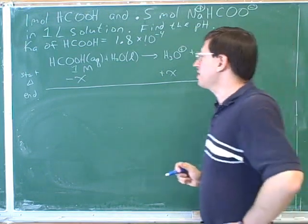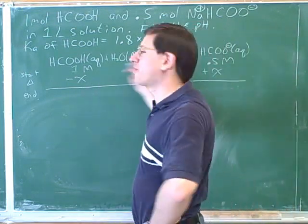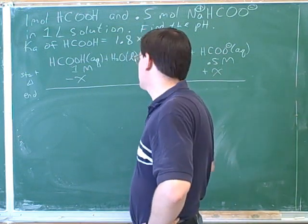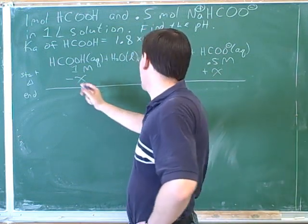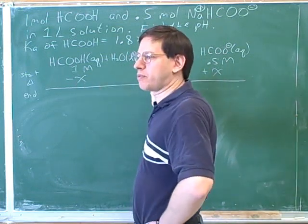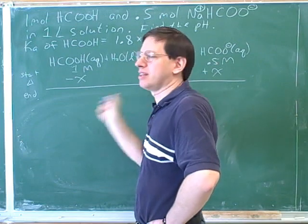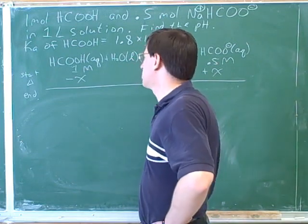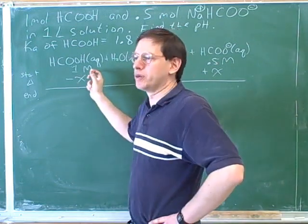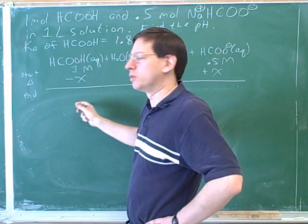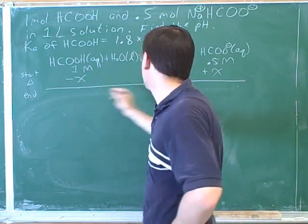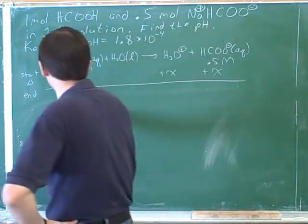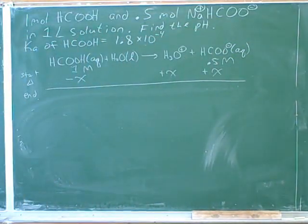It's not really obvious even whether this reaction is going to go forward or reverse — you could just as well be adding x to the left side and subtracting x from the right. It all comes out in the math. But the simplest thing is to assume it's going forward. So we're generally going to assume these reactions go forward, put a negative here and a positive here.